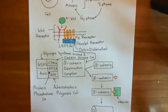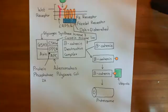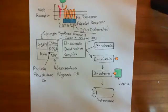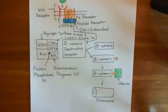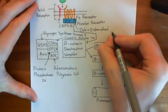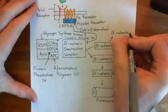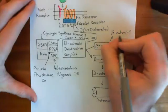So if the beta-catenin destruction complex is no longer functional, what happens to beta-catenin? You are continuously making beta-catenin, so if you've stopped destroying it, the beta-catenin you've made is just going to stay in the cytoplasm and accumulate. The result of activating the Wnt/beta-catenin pathway is that beta-catenin levels go through the roof — they accumulate in the cytoplasm of the cell.